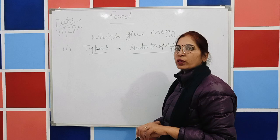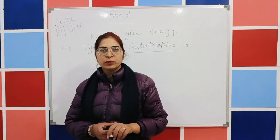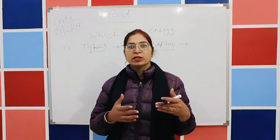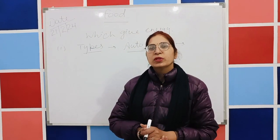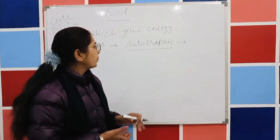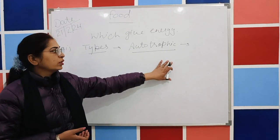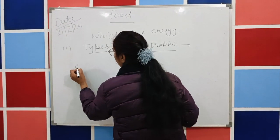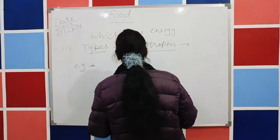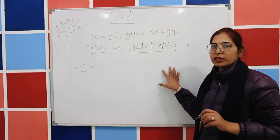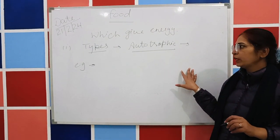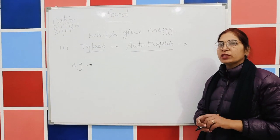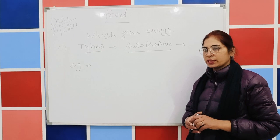Autotrophic nutrition involves simple substances. When plants prepare their food in the presence of sunlight and chlorophyll, this process is known as autotrophic nutrition. This process is also known as photosynthesis.